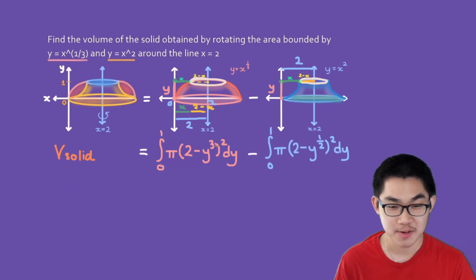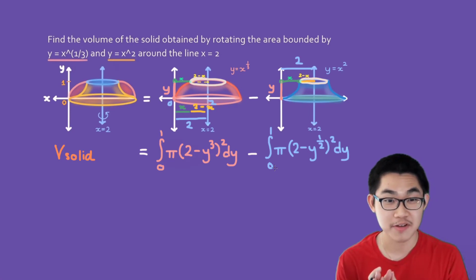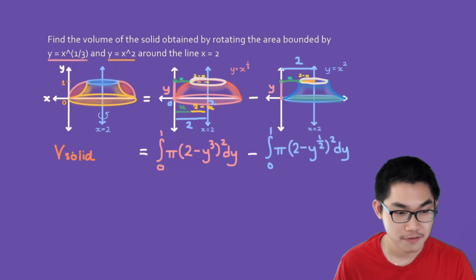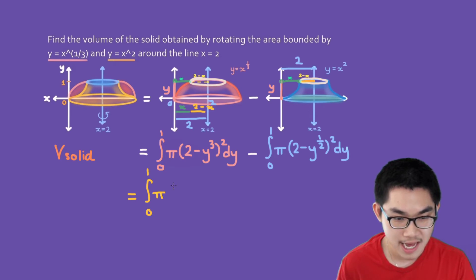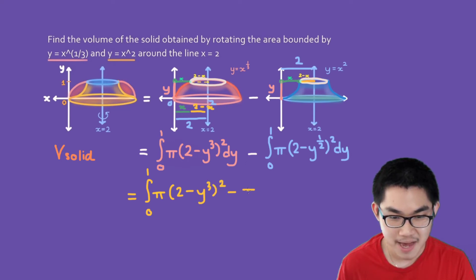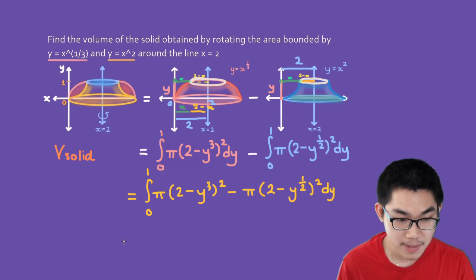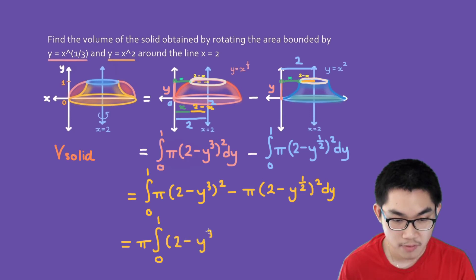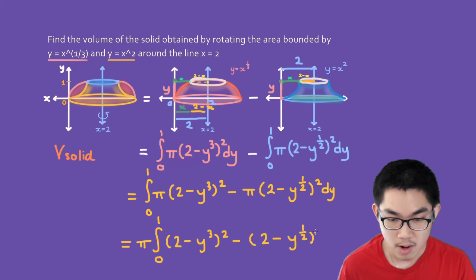Now since both of these integrals have the same boundaries, we can smash them together into one integral, which simplifies a lot of things. The volume of the solid equals the integral from 0 to 1 of π(2 minus y³)² minus π(2 minus y^(1/2))² dy. We then factor out π, giving us π times the integral from 0 to 1 of (2 minus y³)² minus (2 minus y^(1/2))² dy.